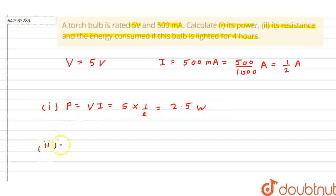Second thing, we need to find its resistance. So, resistance is V upon I. This will be 5 upon 0.5 which is equal to 10 ohm.